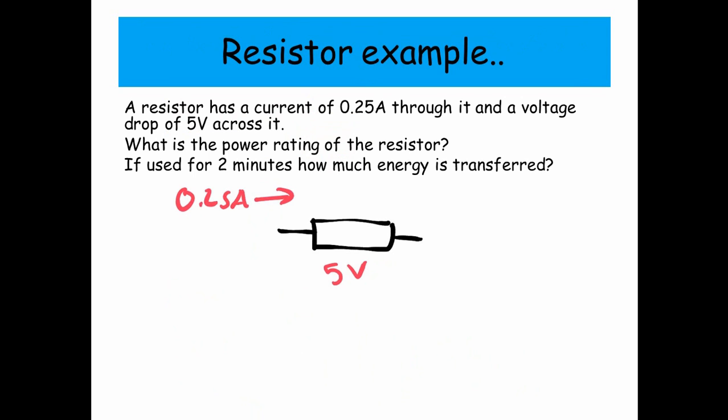So here's our resistor. It's got 5 volts across it, and a current of 0.25 amps going through it. So we're going to use our formula, P equals IV. So 0.25 times by 5 gives us 1.25 watts.